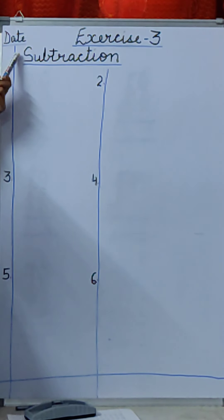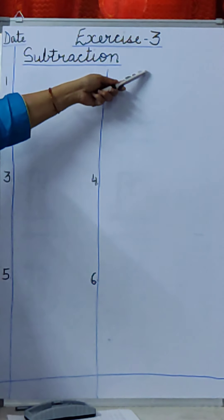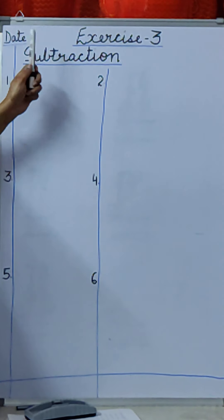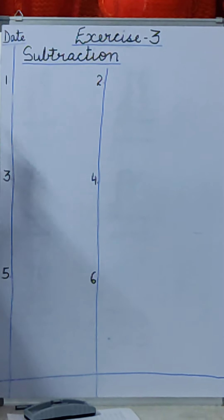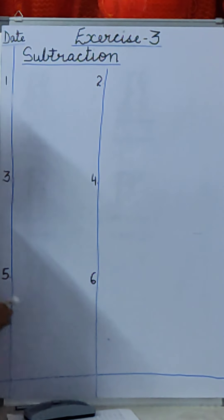Now first you will write the date. Today is date. When you write exercise 3, then you leave a box and you write subtraction and then we will start writing our sums.